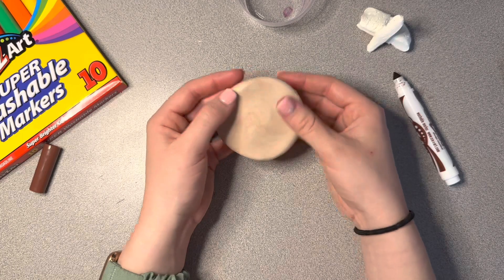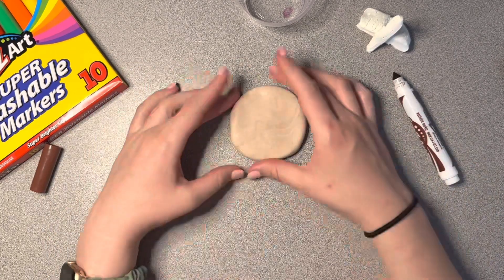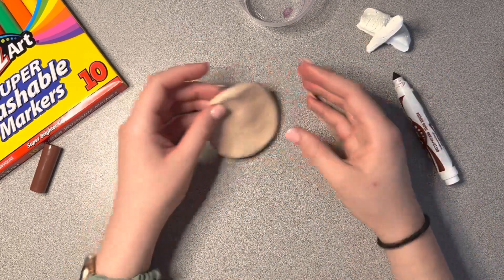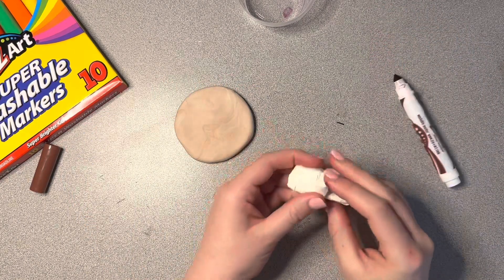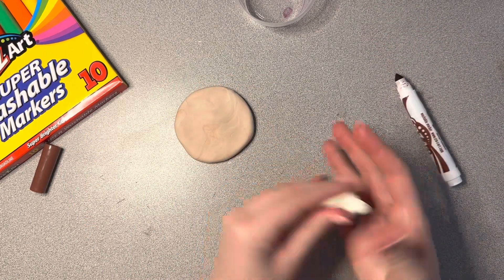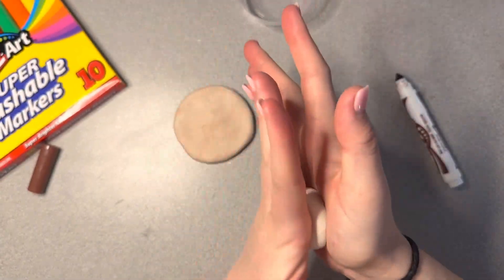Okay, so this is where you can kind of design your cookie however you want. I'll have some examples on the screen that you can choose from. If you're just wanting white frosting, something really simple, roll a ball, flatten it.